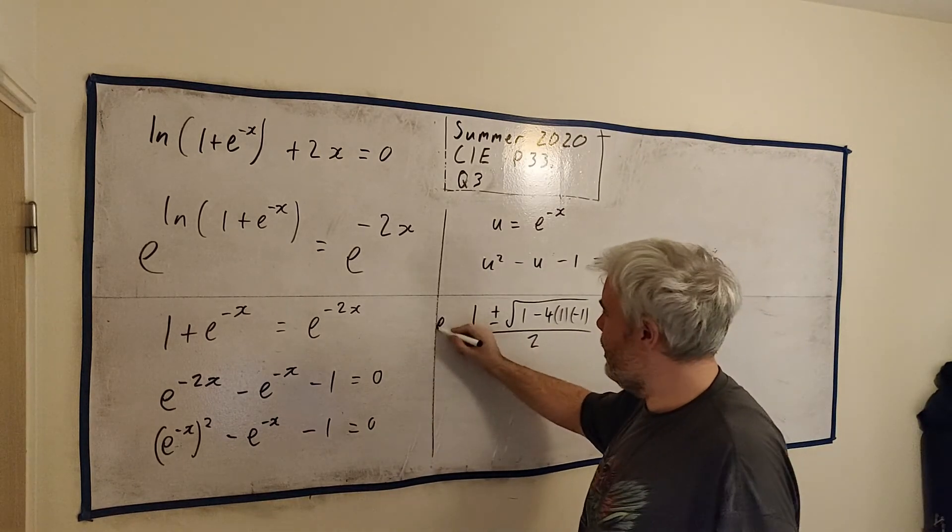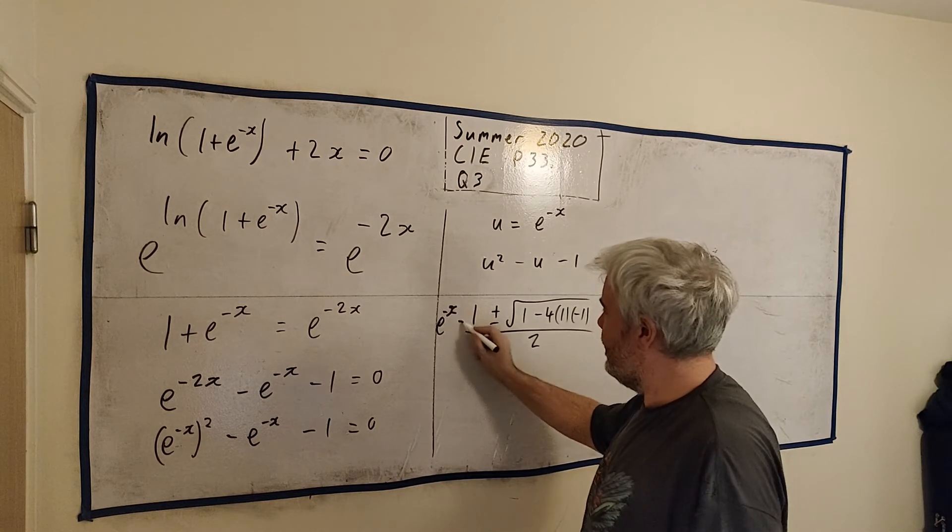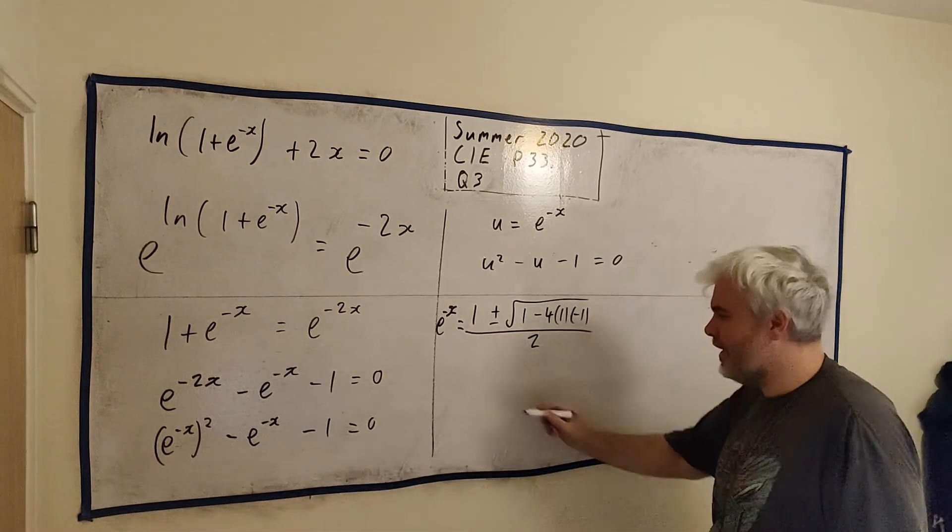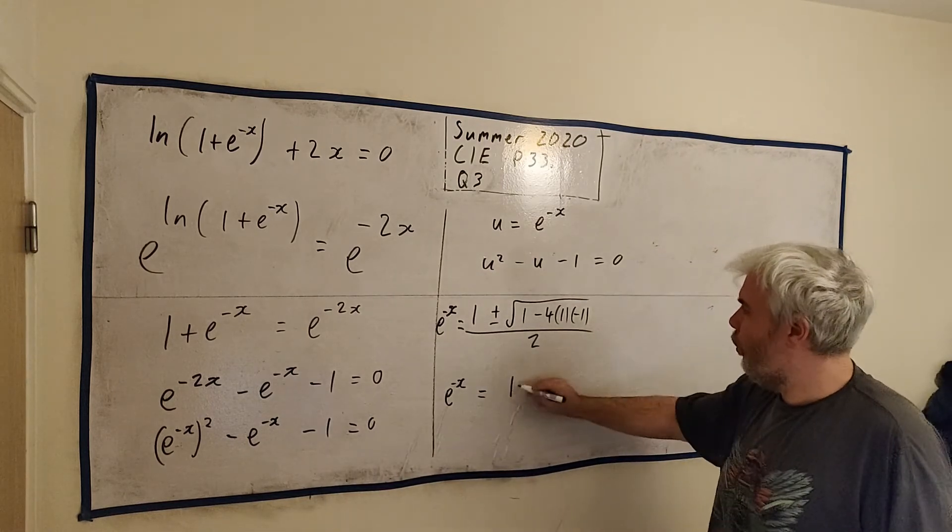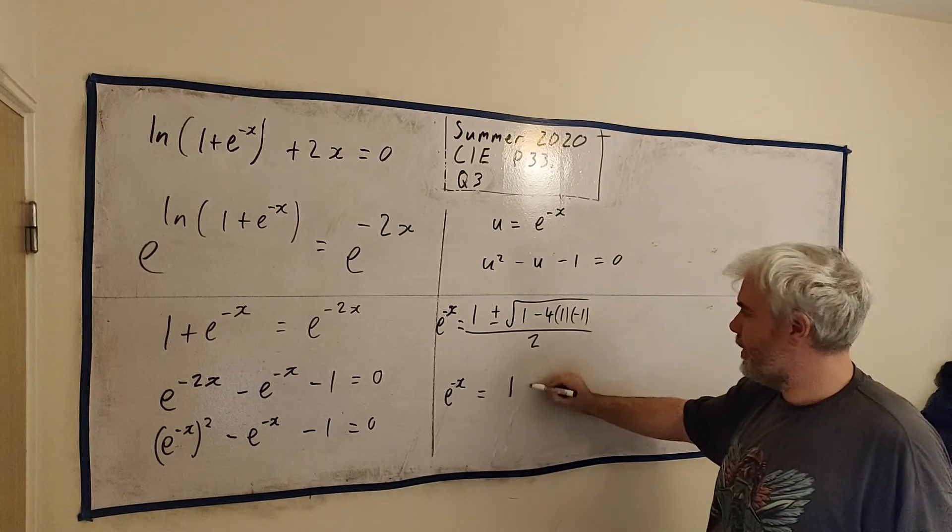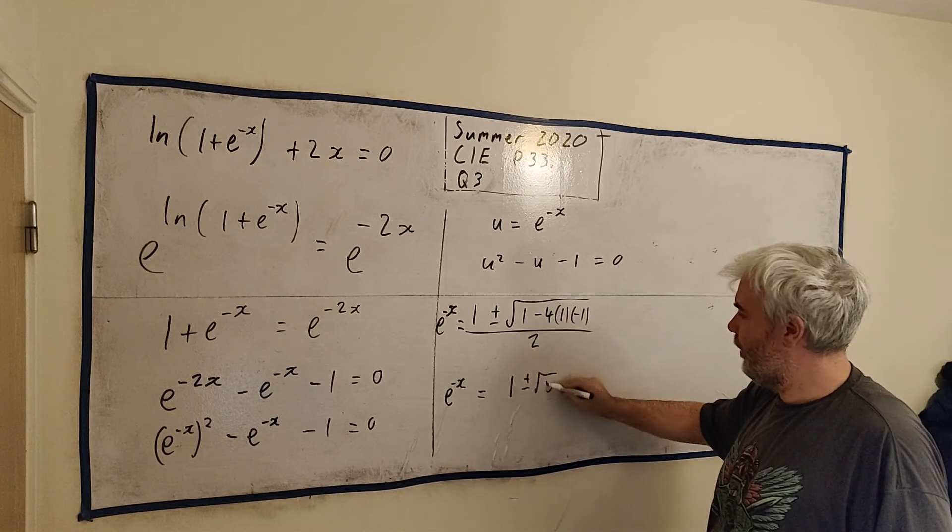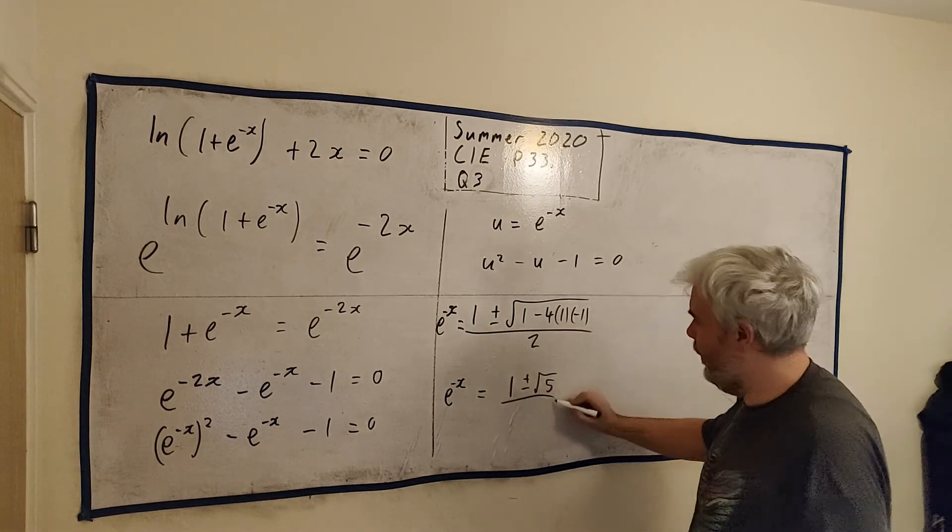Let's clean this up. This is e^(-x) is equal to all this. Let's clean it all up. e^(-x) is equal to 1 plus or minus the square root of 5 all divided by 2.